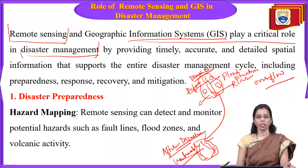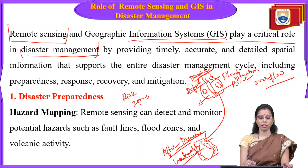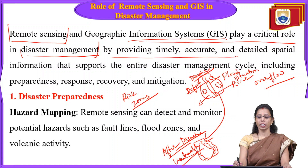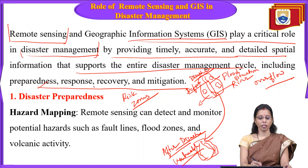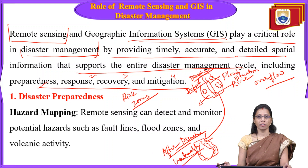If we are prepared and have prior information about risk zones, we can avoid those areas with the help of disaster mapping. Remote sensing and GIS provide timely, accurate, and detailed spatial information that supports the entire disaster management cycle — including preparedness, response, recovery, and mitigation. These are the four phases of the disaster management cycle.